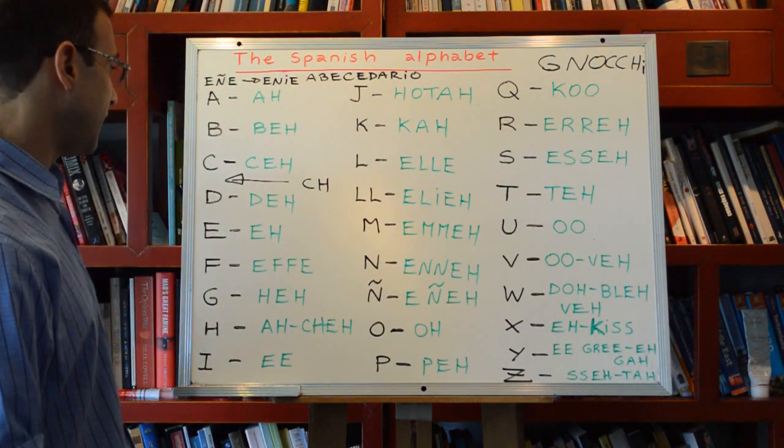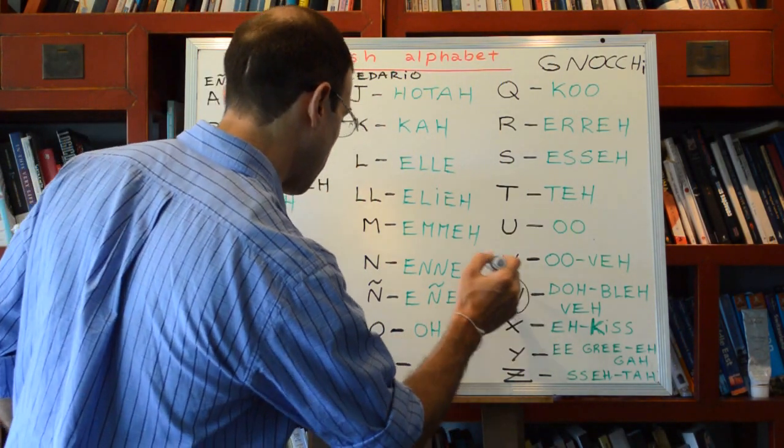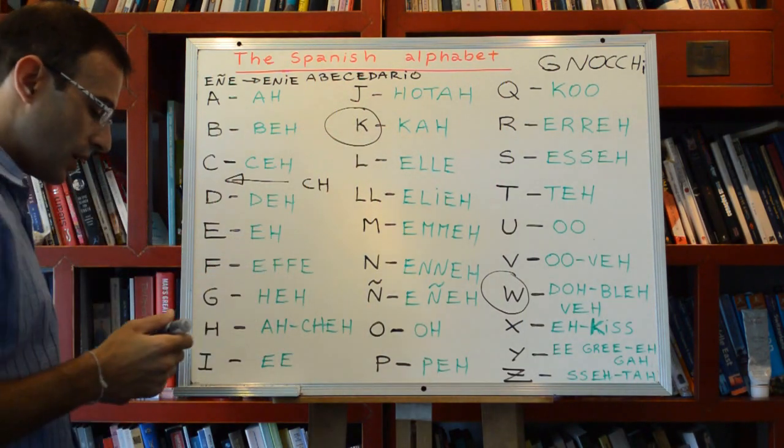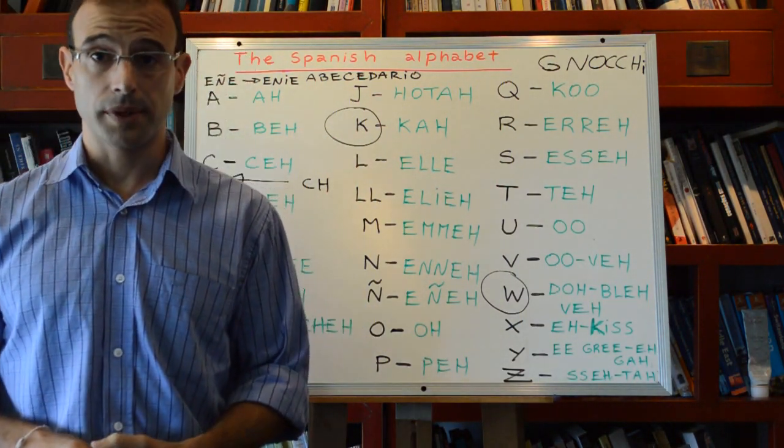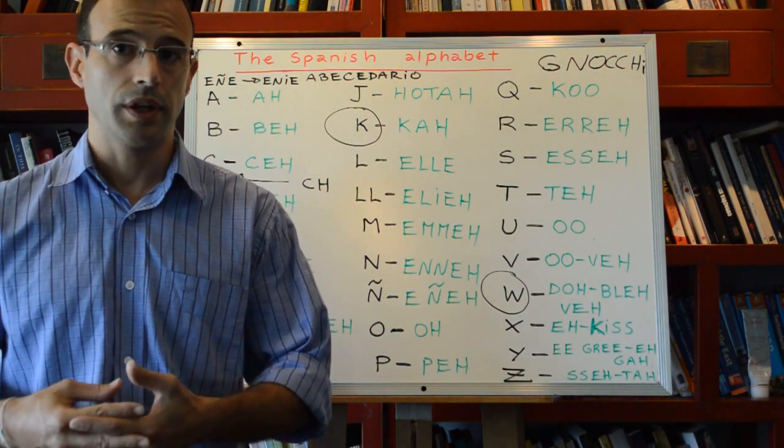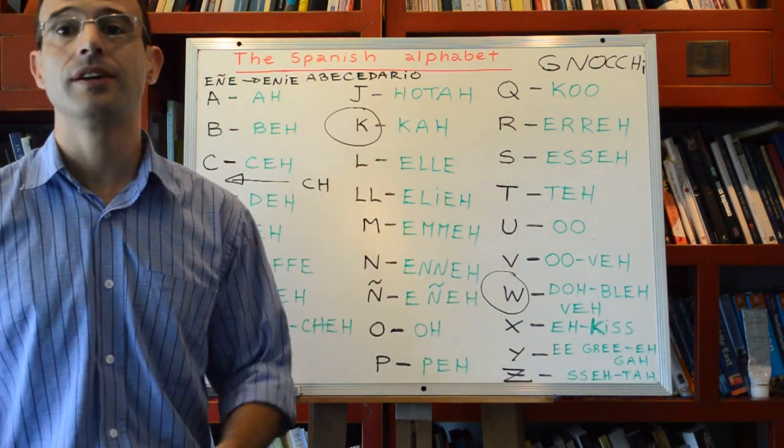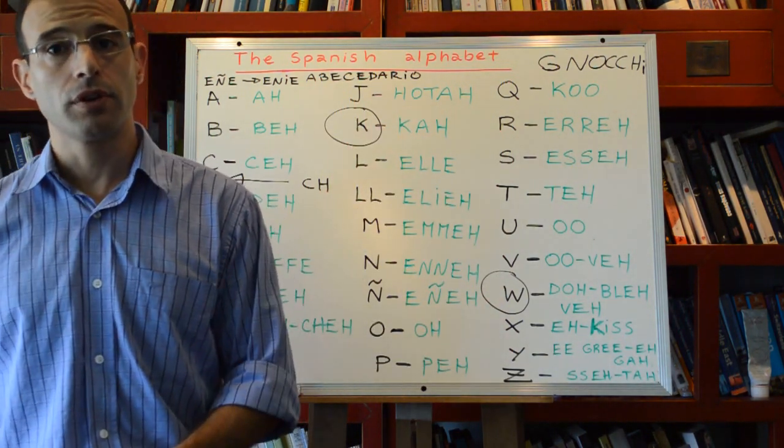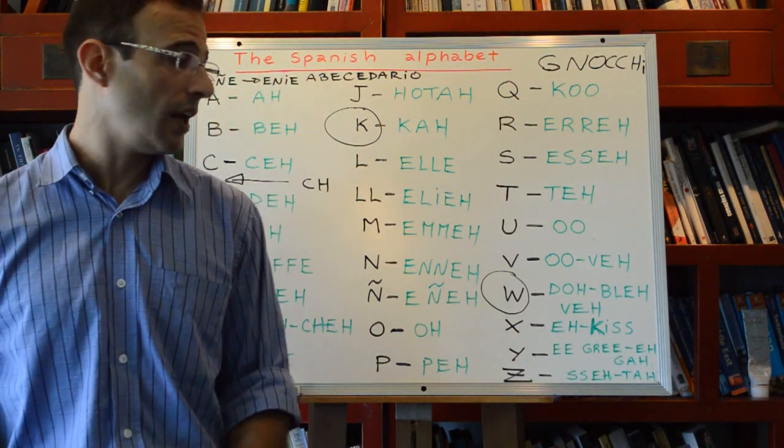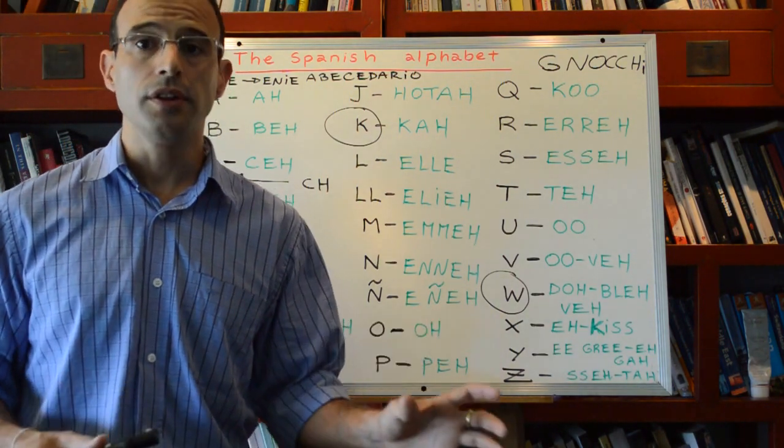W, letter W in Spanish, and letter K, are controversial letters from the alphabet because there is no original Spanish word with W or with K. Therefore there is some controversy saying that they should be removed from our alphabet.